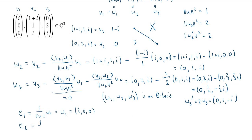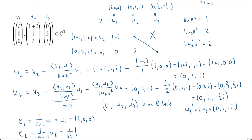How about E2? That will be 1 over the length of W2 times W2. The length of W2 is the square root of 2. So 1 over root 2 times our W2, which is 0, 1, i. Multiplying we get 0, 1 over root 2, and 1 over root 2 i.